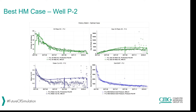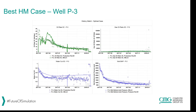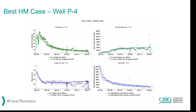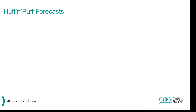These slides show the actual best history match case for the three wells. The P2 well shows a relatively good history match, as does the P3 well and the P4 well. With a good history match achieved for all three wells, we can now move into the forecast portion of this simulation study.